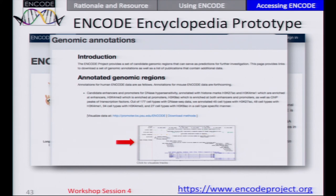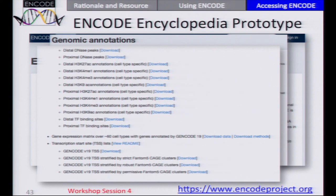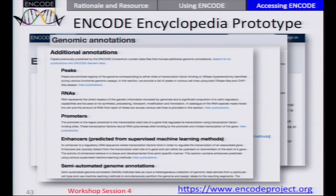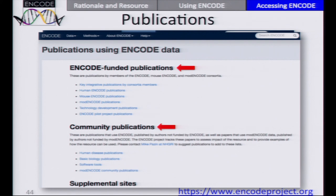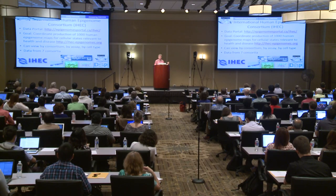In the top half of the genomic annotations page, we have simplified tools — you can visualize data or download what we think are the most important human elements, and we'll be doing this for mouse soon. Further down the page, you can find links to many detailed analyses done for many specialized reasons. We also share publications from the consortium — ENCODE-funded publications — and also publications from the community: people without ENCODE funding who have used ENCODE data. If you've done some of these and would like to share, send me an email, as they're challenging to find since 'ENCODE' is a common English word.